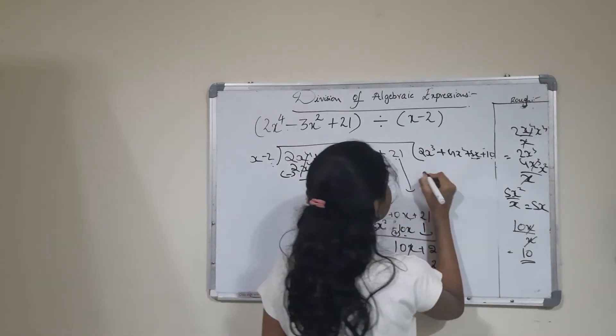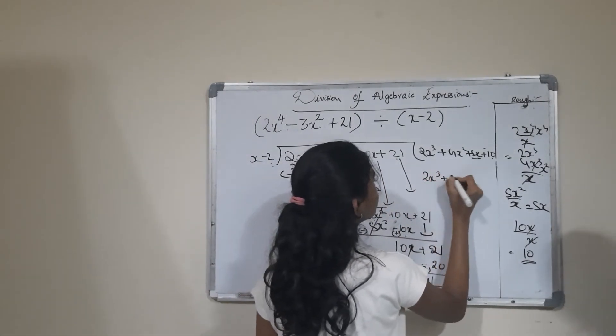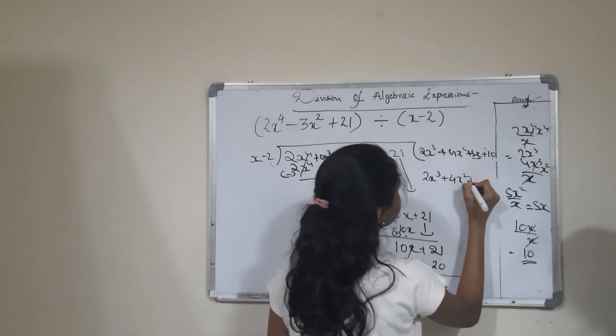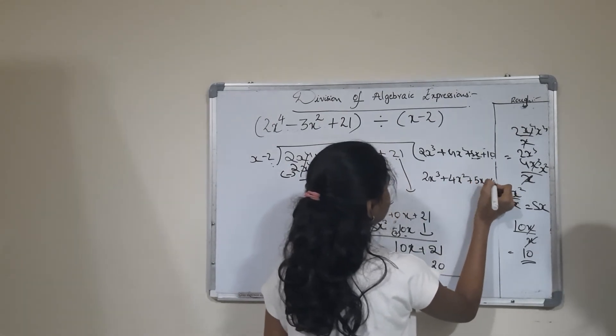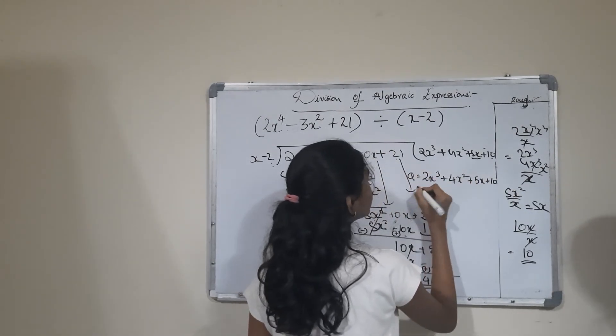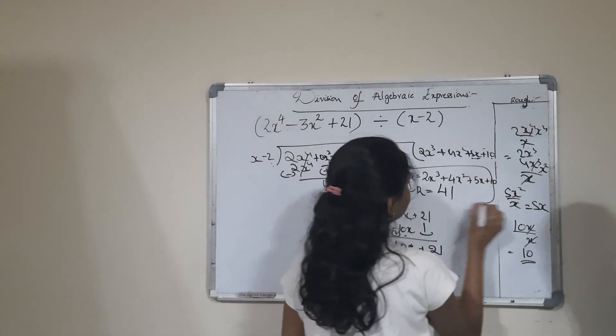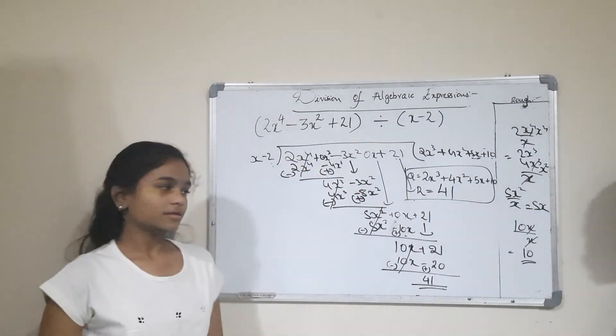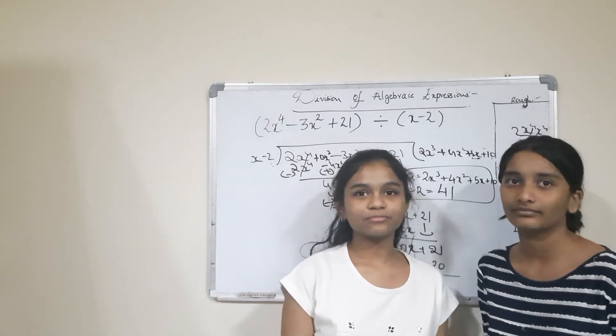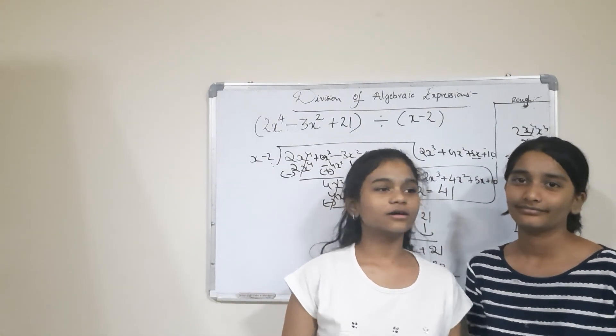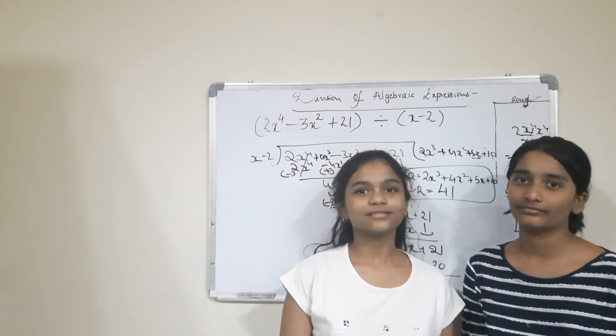The quotient is 2x^3 + 4x^2 + 5x + 10, and the remainder is 40. Thank you for watching. Please share and subscribe to Barita Math Solutions. Click the bell icon for notifications.